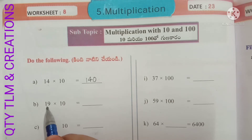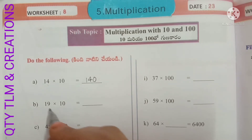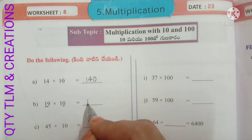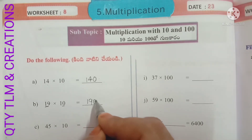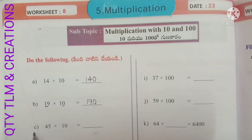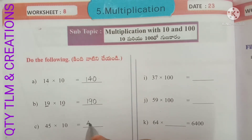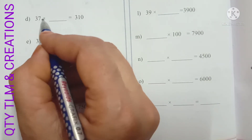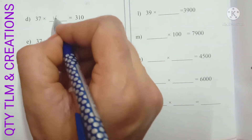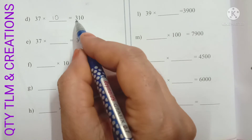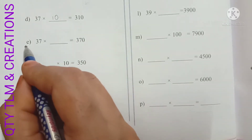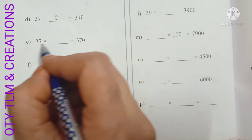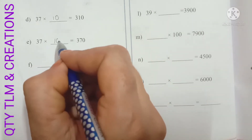Next B: 19 into 10. Here also we get the multiplicand followed by one zero, so we will get 190. Next C: 45 into 10, we will get 450. Next D: 31 into 10, that equals 310. Next E: 37 into dash equals 370, so we have to multiply here with 10.